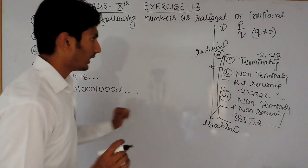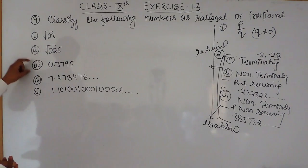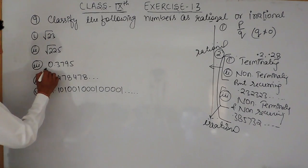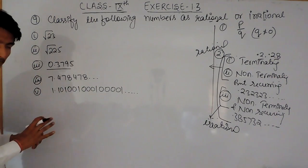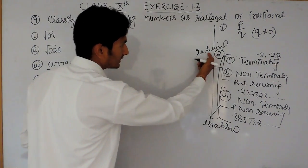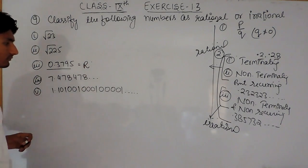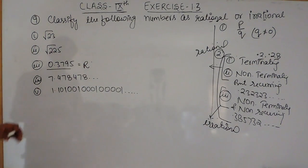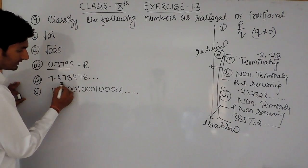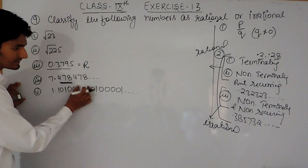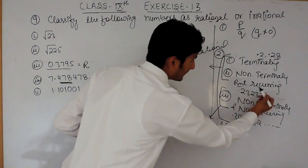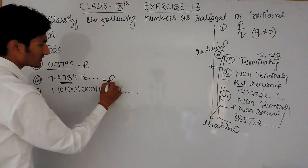Now we have to find out in these five parts which are rational and which are irrational. Looking at the first number, it is clearly terminating — after some point it terminates — so by this definition it is rational. The second number, 7.478478..., has 478 repeating itself. It is non-terminating but recurring, so this will also be a rational number.